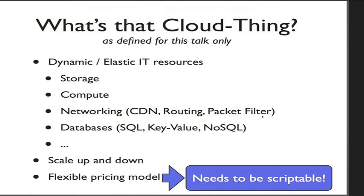It also could be routing stuff, packet filters — what we call security groups. You can easily have databases, messaging systems. The key here is that you can scale up and down those things. When you scale up you pay more, but when you scale down, the idea is you don't pay anything for the stuff you don't use. As mentioned, that has to be scriptable because nobody really wants to do that all by hand. And Python, I believe, is a perfect language to do so.